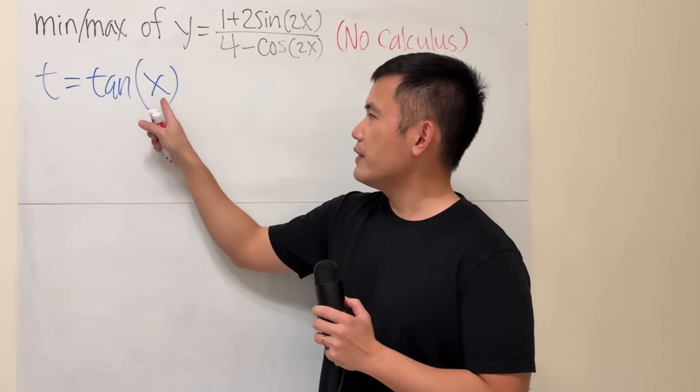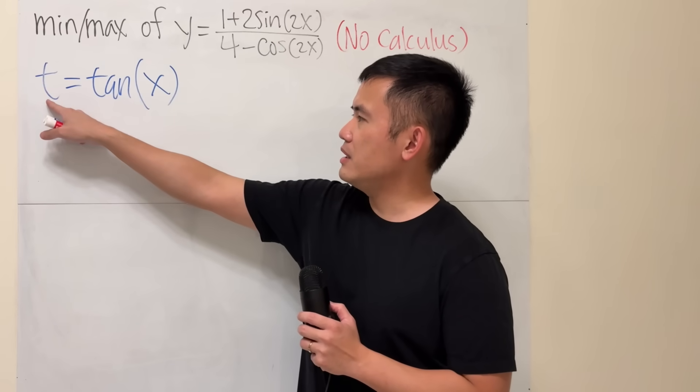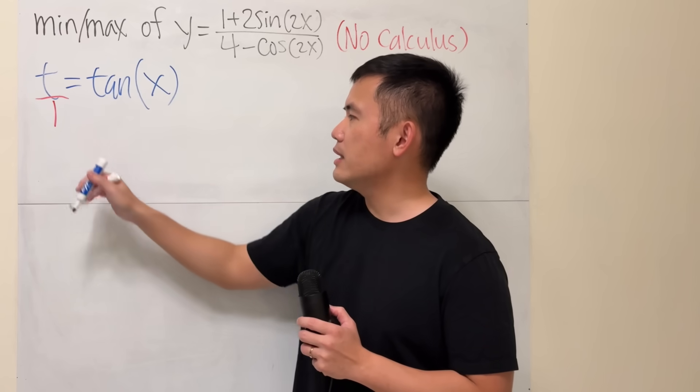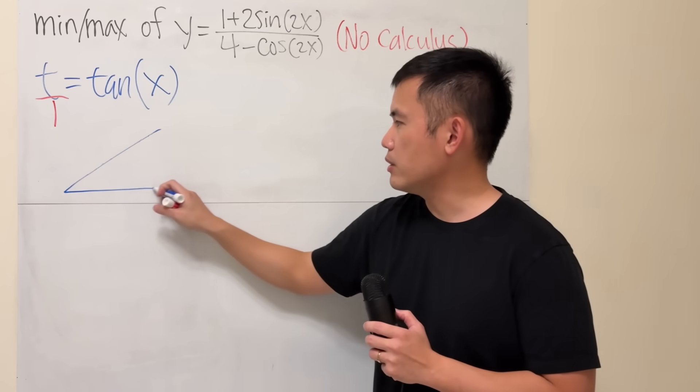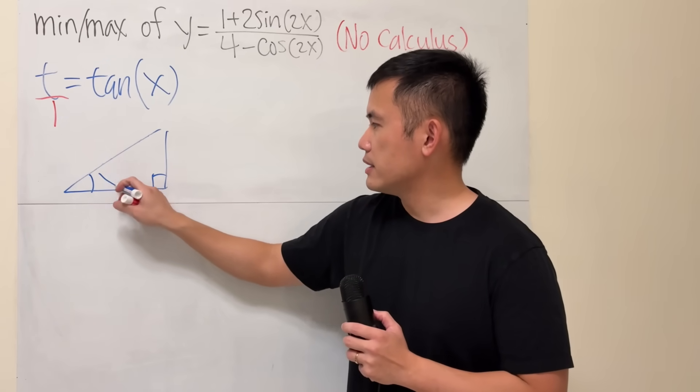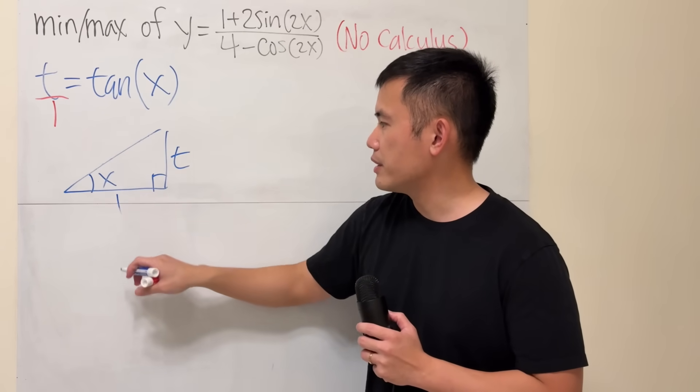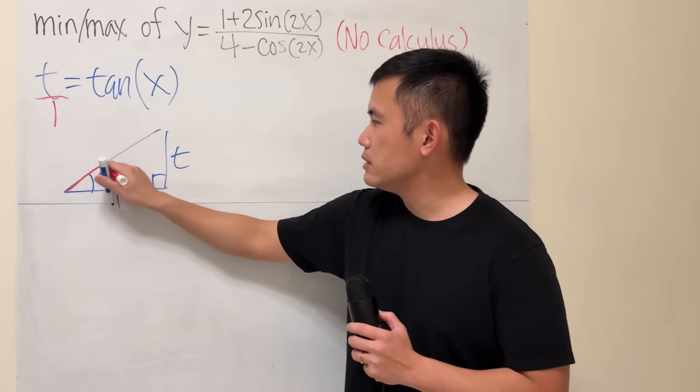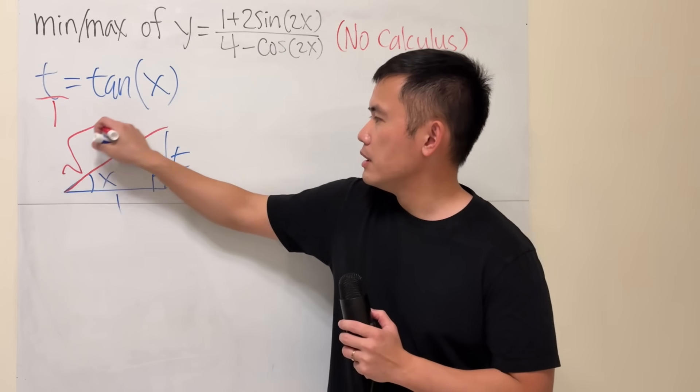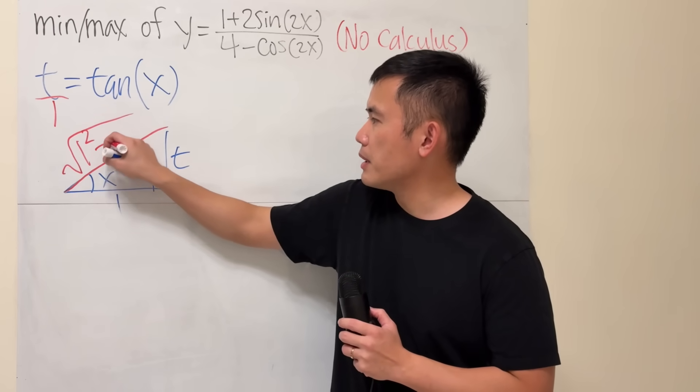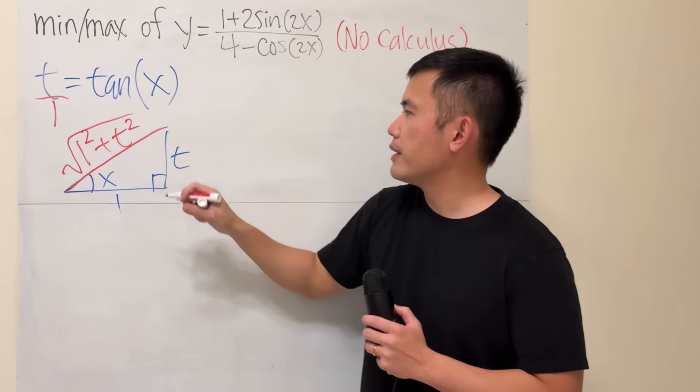Right here, tangent of x is t. Let's put it as t over 1, and then we can draw a right triangle. x is the angle here, and tangent is opposite over adjacent. So we have t and 1 here, and the hypotenuse is just going to be square root of 1 squared plus t squared.